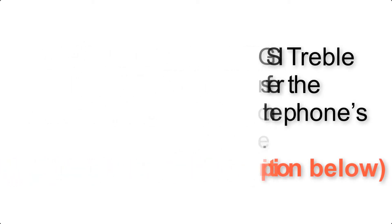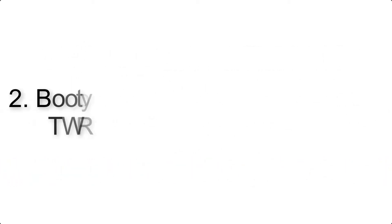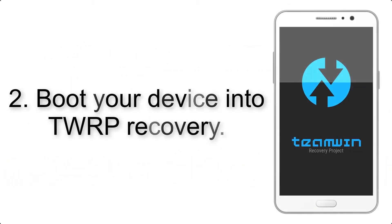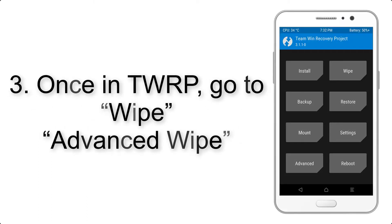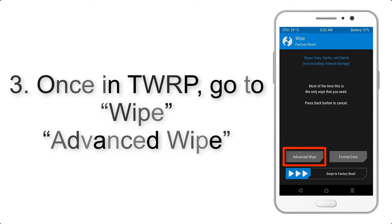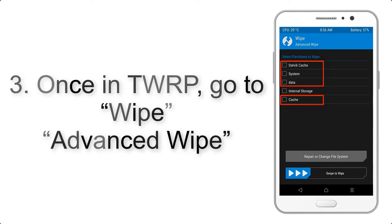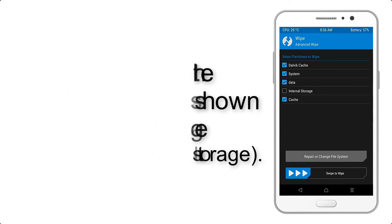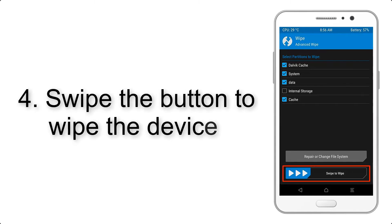Step 2: Boot your device into TWRP recovery. Once in TWRP, click on Wipe, then Advanced Wipe, and select the checkboxes as shown in the image, excluding internal storage.